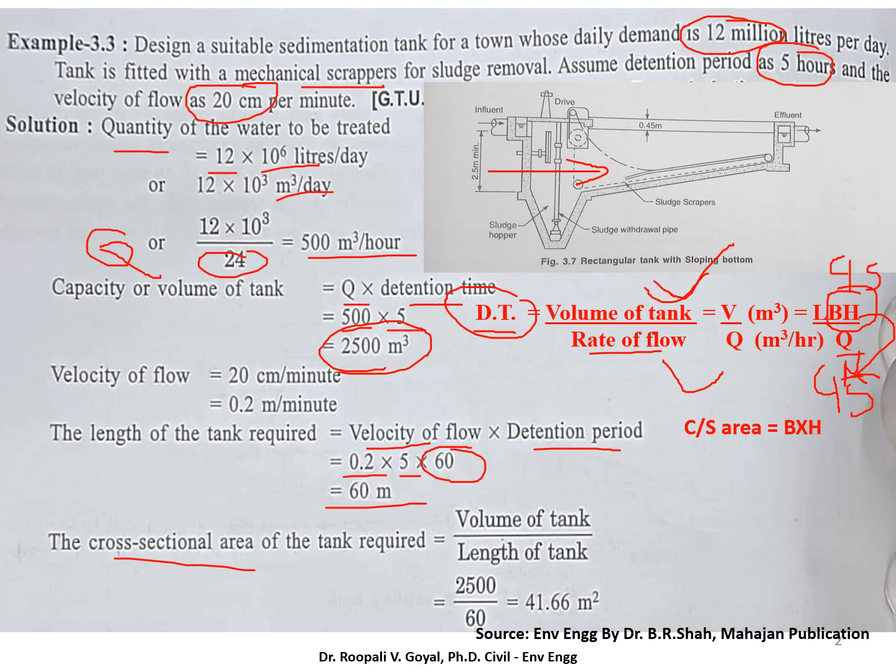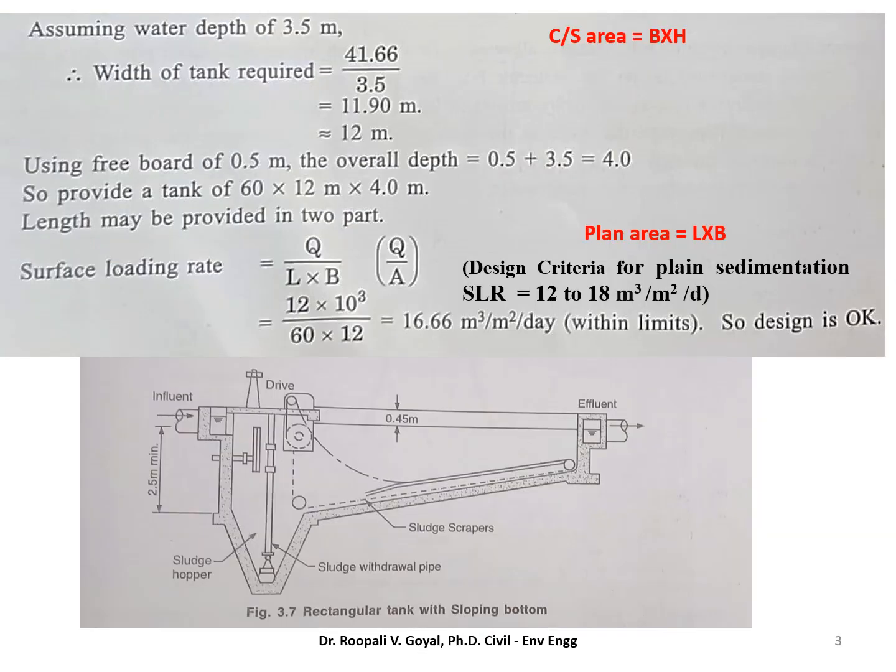Now we have to find out the cross sectional area. So this cross sectional area, as I told you, it is volume of tank divided by length of tank. If it is LBH, this is a cross sectional area. So here you can see volume is equal to LBH. If we find out the volume divided by L, so here you can get this cross sectional area, 2500 volume, 60 is length. So you will get 41.66 meters square as cross sectional area. And the cross sectional area is B into H.